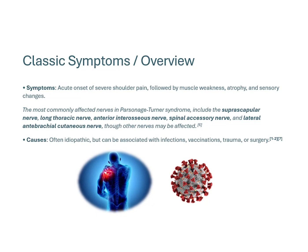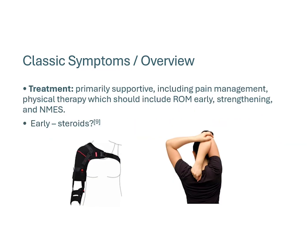The cause is considered idiopathic, though thought to be autoimmune in nature, and is sometimes associated with infections, vaccinations, and trauma, which may include surgery. Treatment is primarily supportive and includes pain management potentially early. Physical therapy should be initiated early as well, definitely including range of motion to maintain active and passive range of motion and to prevent contracture. As you progress, you want to incorporate more strengthening; there's good evidence for neuromuscular electrical stimulation in peripheral nerve injury. Early on, there's some evidence that a short course of high-dose steroids may be effective, at least for pain management and potentially longer-term strength and function.